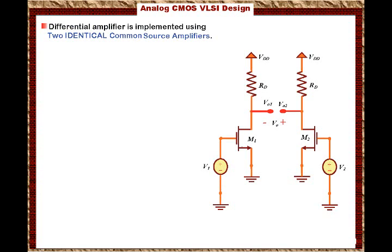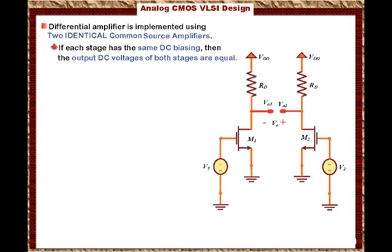Here is the clever trick of the circuit: if each stage has the same DC biasing and all components are identical, then the DC output voltages of both stages are equal. The DC voltage at the gate is the same and the DC voltage at the outputs is the same. The differential output voltage is the voltage difference across both outputs — we stress here that it is the AC signal.